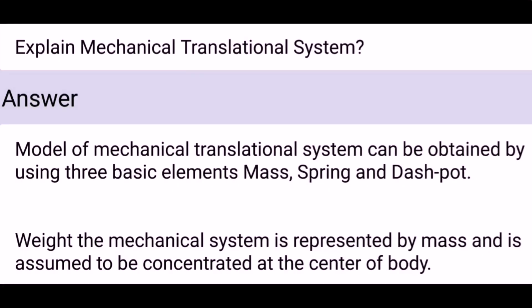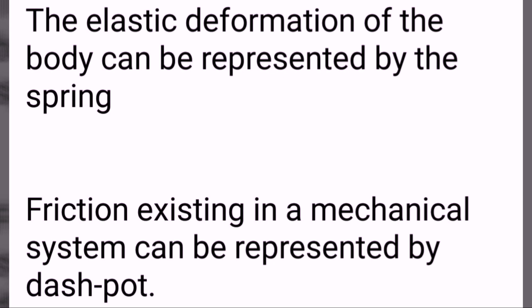Explain the mechanical translation system. A model of a mechanical translation system can be obtained by using three basic elements: mass, spring, and dashpot. The mechanical system is represented by mass and is assumed to be concentrated at the center of the body. The elastic deformation of the body can be represented by the spring. Friction existing in a mechanical system can be represented by the dashpot.